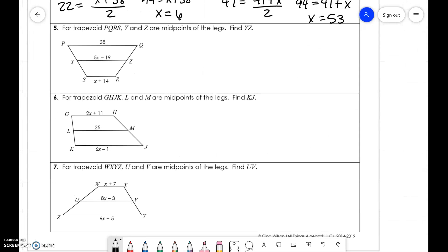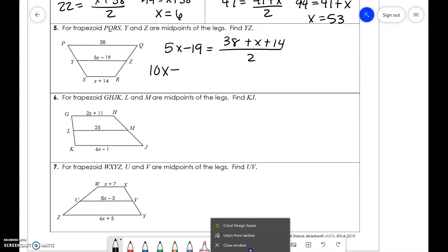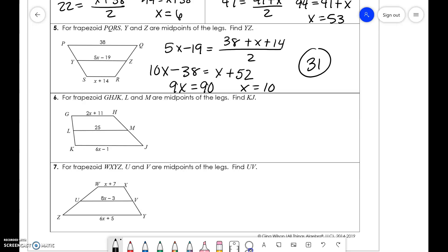Last three problems are dealing with algebra now. Set up this problem the same way. We know that this middle line, 5X minus 19, equals the top and bottom divided by 2. Multiply both sides by 2. 10X minus 38 equals X plus 52. 9X equals 90, X equals 10. Then we plug it in for YZ. So, 50 minus 19 is 31.